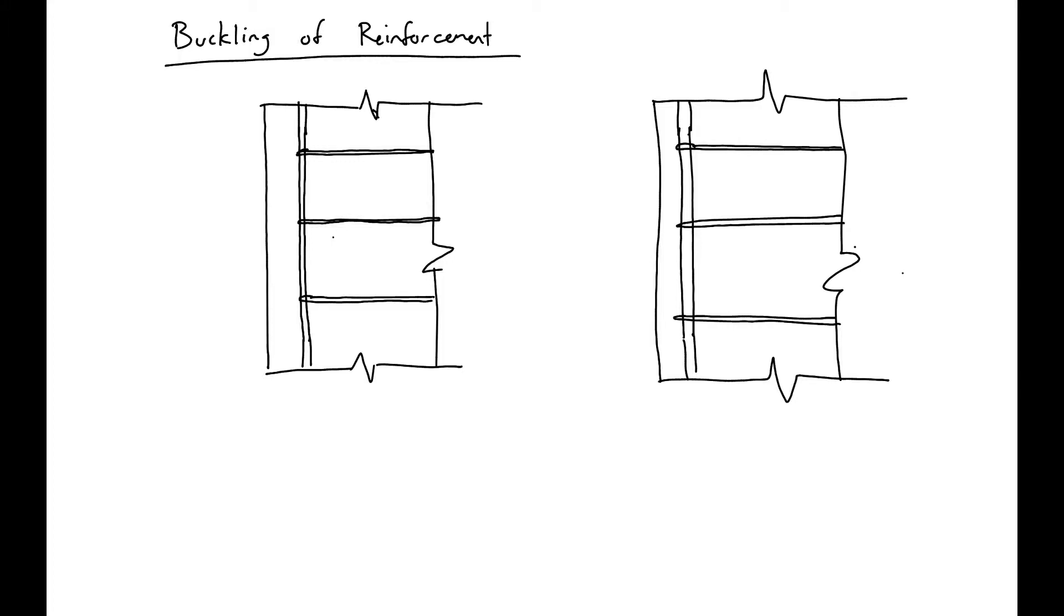Our longitudinal reinforcement is going to be susceptible to buckling, and this can happen in two different ways. The first, we could have buckling in between our transverse reinforcement. The second is we could have buckling that occurs across multiple legs of reinforcement.